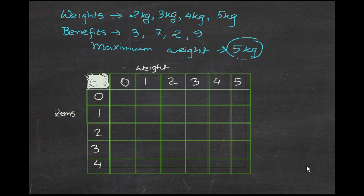Hello everyone, today we're going to be talking about the 0/1 Knapsack problem, which is a dynamic programming approach. The problem states that a thief wants to steal a few bags of gold, but has a maximum weight capacity he can carry at one time. The maximum weight in this example is 5 kg. There are four items: 2 kg, 3 kg, 4 kg, 5 kg, with corresponding benefits.